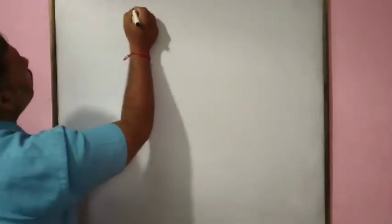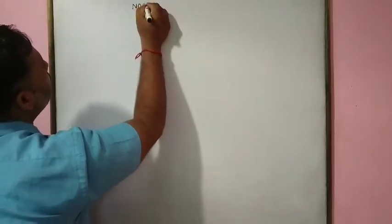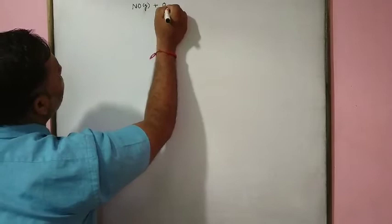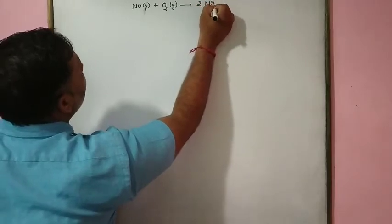In the previous class, we discussed the reaction where NO gas reacts with oxygen gas to give 2NO₂. For that chemical reaction, we deduced the value of X and Y from the experimental values.